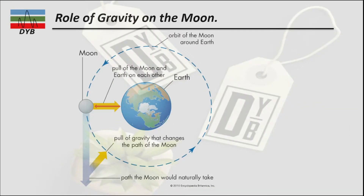Looking at gravity's role on the Moon: when talking about the solar system, the Sun is at the focus, but when talking about Earth gravity, the Earth is the focus. Because of Earth's gravitational pull, the Moon stays in orbit. If there were no gravity, the Moon would fly off in a straight line, but the presence of gravity keeps it revolving around the Earth.